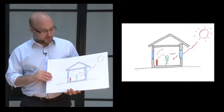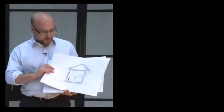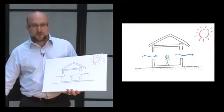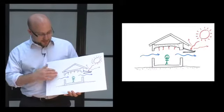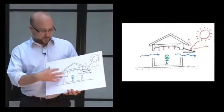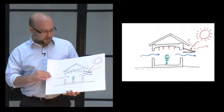So traditionally the way of keeping cool is to open the building up and let the air flow through. That cools it down nicely, and we can put shading on to keep the Sun out and use the building fabric to absorb the heat that's storing up in the space.